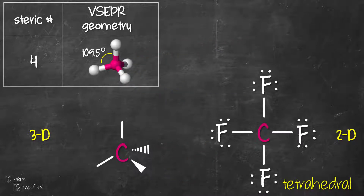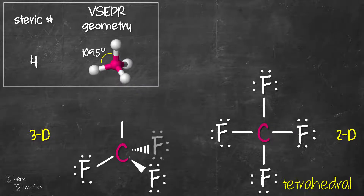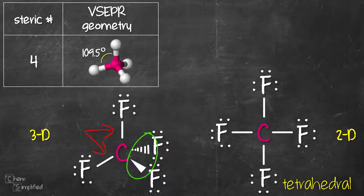Now that we have all the bonds drawn out, we place the fluorines. A pro tip when drawing tetrahedral: the two solid lines should be right next to each other, and the two wedges will be right next to each other as well.